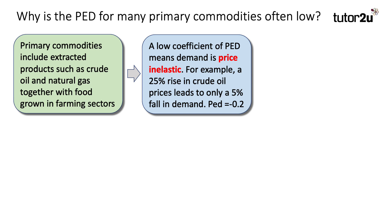A low coefficient of price elasticity of demand means that demand for a particular commodity is price inelastic. For a simple numerical example, a 25% increase in the crude oil price might lead to only a 5% fall in demand. 5 over 25 is minus 0.2, and any value less than 1 is price inelastic.